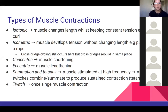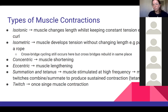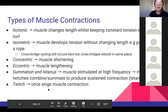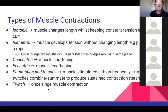Types of muscle contractions: isotonic is when the muscle changes length — like a bicep curl — whereas isometric is when it doesn't change length, such as pushing against a wall. In isometric contraction, cross-bridge cycling still occurs but the Z lines don't move — tension is still generated. Concentric contraction is muscle shortening (first half of a bicep curl), and eccentric is muscle lengthening (the second half). Summation is multiple muscle twitches close together, and tetanus is when they occur at high enough frequency to produce a smooth muscle contraction.